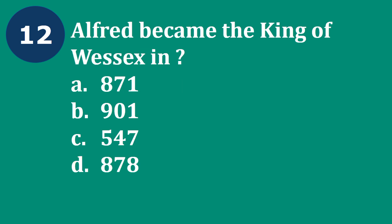Question 12: Alfred became the king of Wasex in — A. 871, B. 901, C. 547, D. 878. The correct answer is A — 871. King Alfred became king of Wasex in 871, and in 901 King Alfred died.